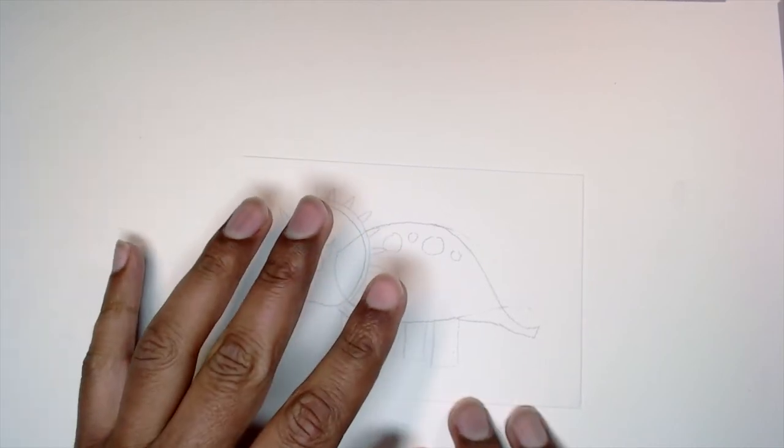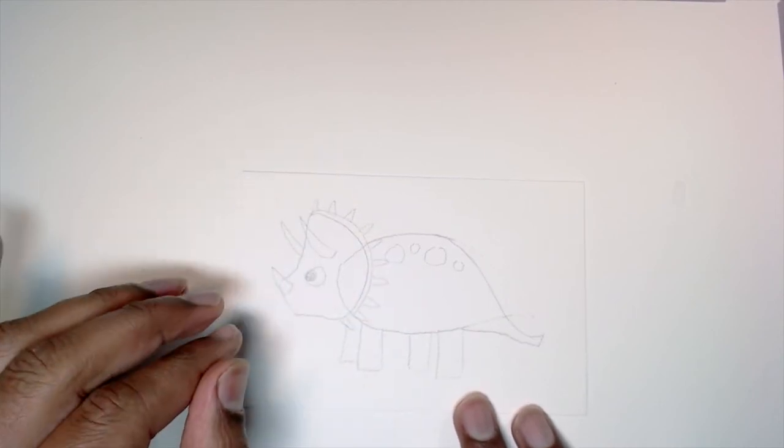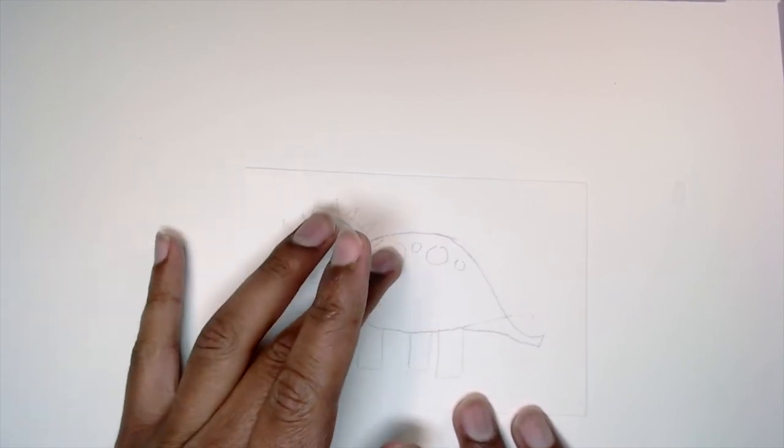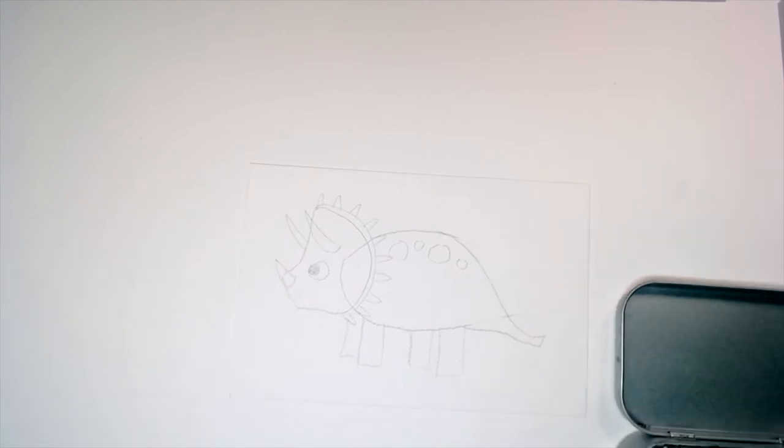And I'm ready to start painting that. So I'm going to do the Triceratops like an orange yellowish color. And then I'll do the spots more of an orange color. So to start,